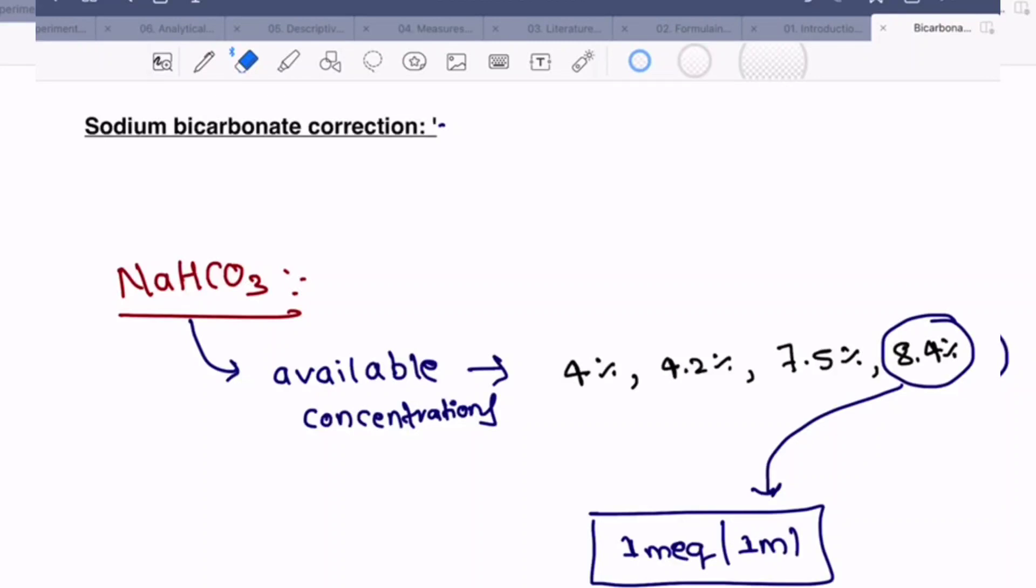Sodium bicarb correction. First, you should know available concentrations of injection sodium bicarbonate. It is available in the form of 4%, 4.2%, 7.5%, and 8.4%.